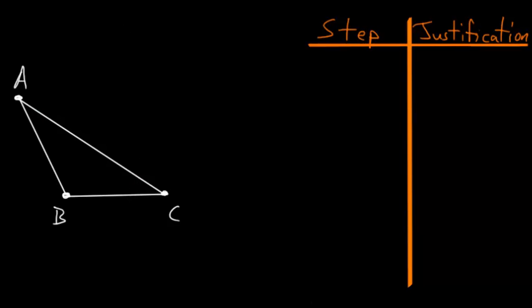In this video I want to choose two angles in particular, say this one and this one here, and show that these two add up to less than two right angles. But the argument would be the same for choosing any two angles.